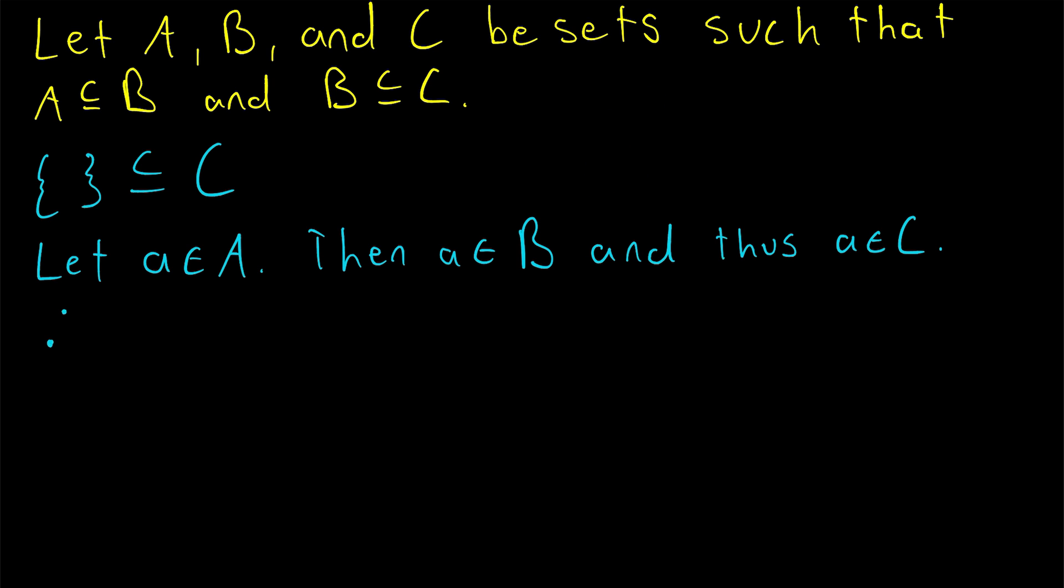Therefore, which I'll use those three little dots to denote, that means therefore, we have that A is a subset of C by definition of subset, because every element of A is also an element of C. And so this proves the transitivity of the subset relation.